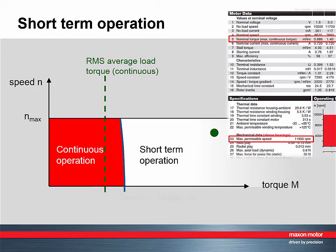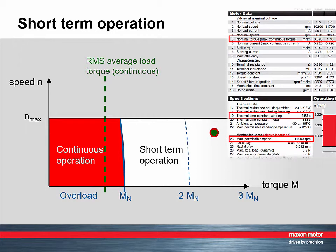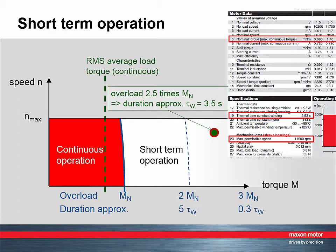Higher torques than nominal are possible, but only for a limited amount of time. How long an overload situation may last depends on the amount of overload torque and the motor type. As a rule, the larger the motor, the longer the overload can be. Typically, overload can last several seconds, as indicated by the thermal time constant of the winding. Roughly speaking, a motor can support two to three times the nominal torque for periods up to this thermal time constant.